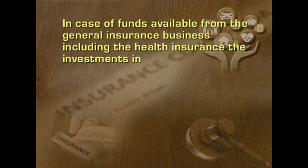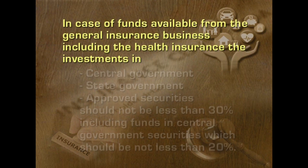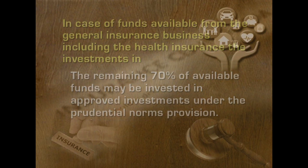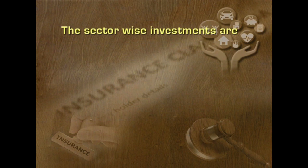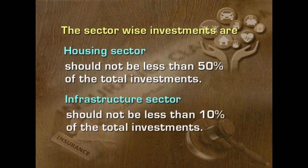In case of funds available from general insurance business including health insurance, the investments in central government, state government and approved securities should not be less than 30%, including funds in central government securities which should be not less than 20%. The remaining 70% of available funds may be invested in approved investments under prudential norms. The sector-wise investments are to be made: investments in housing sector should not be less than 50% of total investments and in infrastructure sector it should not be less than 10% of total investments.